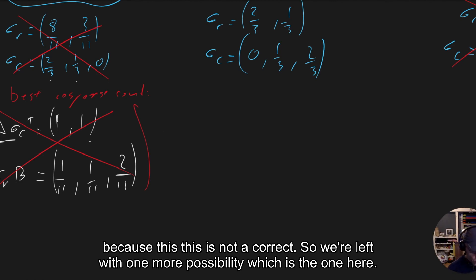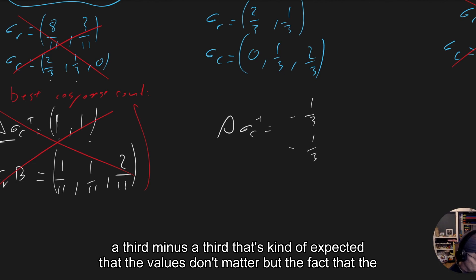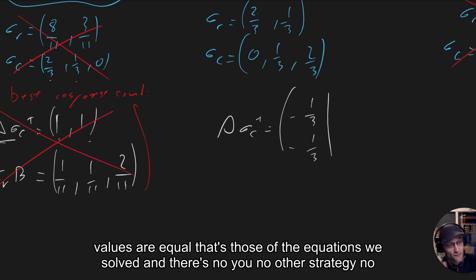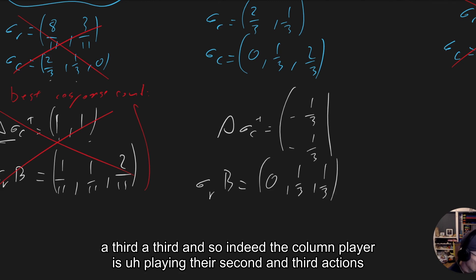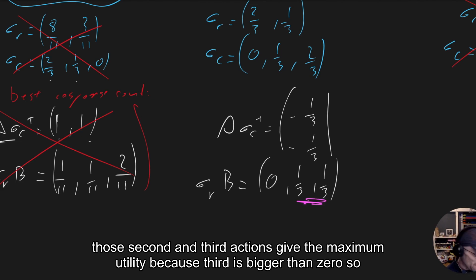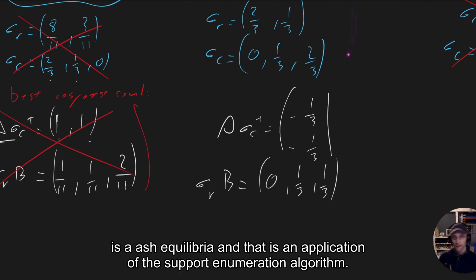We're left with scenario 2. Checking the best response condition: the utilities to sigma_c are (minus 1/3, minus 1/3) — the values are equal, as expected from the equations we solved, and there's no other action available. Checking sigma_r's utilities gives (0, 1/3, 1/3). The column player is playing their second and third actions, which give the maximum utility; playing the first action gives 0, which is less. So the column player has no reason to deviate, and this strategy pair is a Nash equilibrium. That is an application of the support enumeration algorithm.